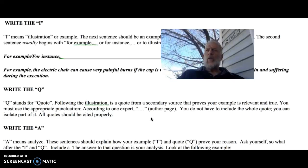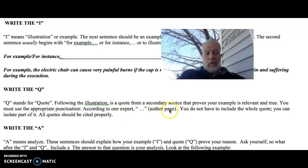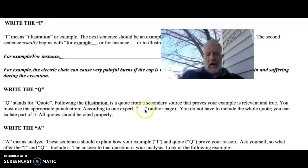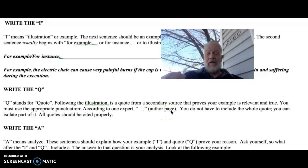Then you would write the Q. You would find a quote or two from your research. Following the illustration, you would use a quote from a source that proves your example is relevant. But you have to use appropriate punctuation. So you would say, according to one expert, comma, quote. You would provide the quotation here, unquote. Then you would provide the author page number. For example, if you were going to say, according to one expert, Mr. Don Davidson from Colorado Mesa University, and you would put his quote here, then you would use the page. If you didn't say Mr. Davidson, you would say something like, according to one expert, then you would put Davidson, comma, page number, in text citation.